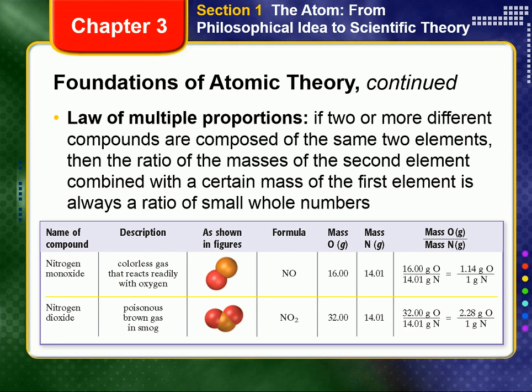This illustrates the law of multiple proportions. If two or more different compounds are composed of the same two elements, then the ratio of the masses of the second element combined with a certain mass of the first element is always a ratio of small whole numbers.